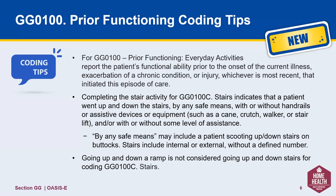On this slide, we have three coding tips to guide you as you fill in your responses. For GG0100, Prior Functioning, we report the patient's functional ability prior to the onset of the current situation. Note also, completing the stair activity for 0100C: the stairs indicate the patient went up and down the stairs by any safe means, whether without handrails or assistive devices, or equipment such as cane, crutch, walker, or stair lift. By any safe means also may include the patient scooting up and down stairs on their buttocks.